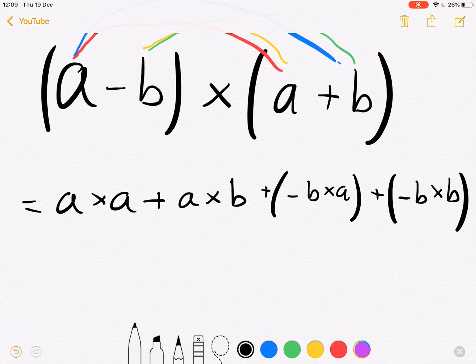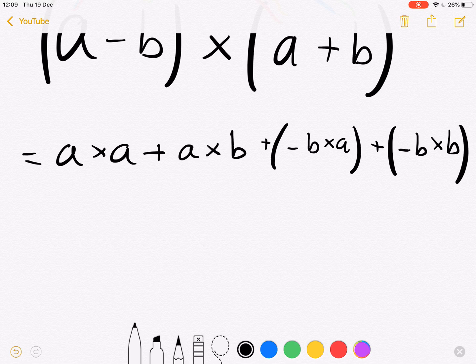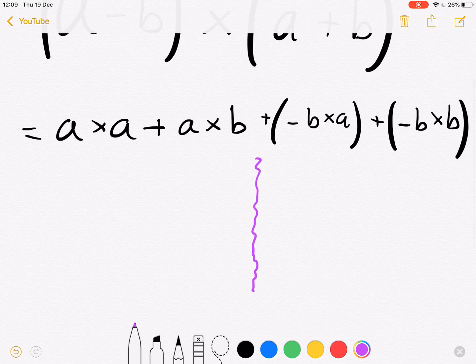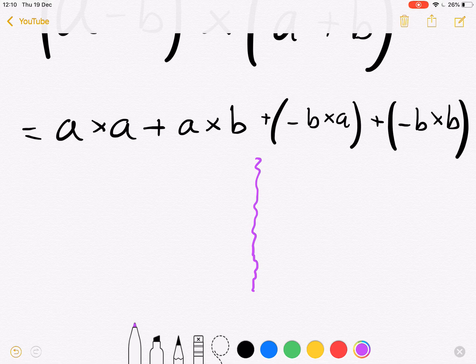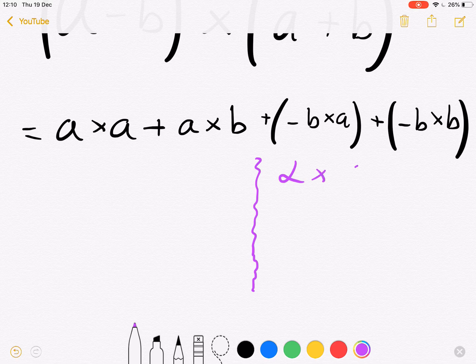Now it doesn't immediately look like we've simplified it, however there are some important rules which we can use. So it should be noted that with the cross product, for any vector alpha, alpha × alpha equals zero.